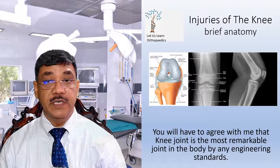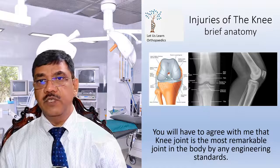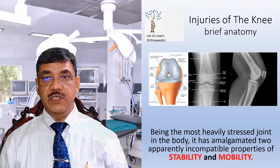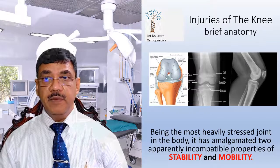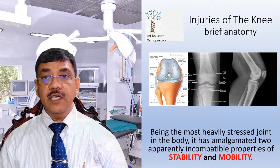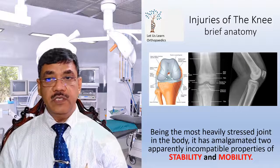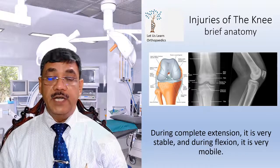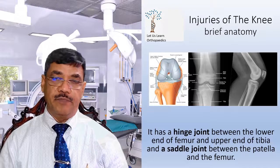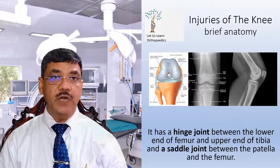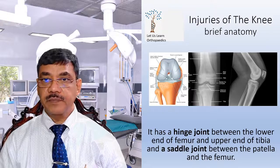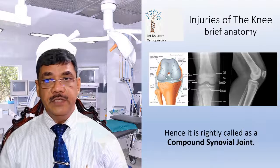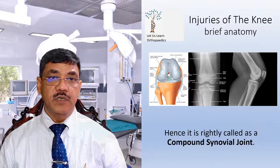The knee joint is the most remarkable joint in the body by any engineering standards. Being the most heavily stressed joint in the body, it has amalgamated two apparently incompatible properties of stability and mobility. During complete extension it is very stable, and during flexion it is very mobile. It has a hinge joint between the lower end of the femur and upper end of the tibia, and a saddle joint between the patella and the femur, and hence it is rightly called a compound synovial joint.